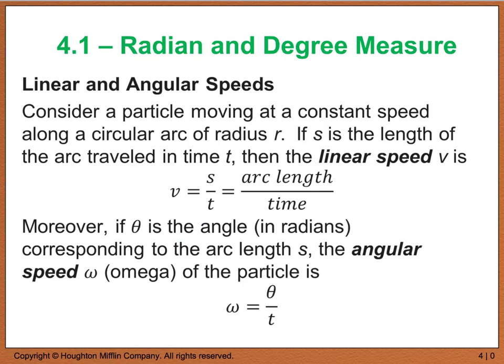Another application of radian and degree measure deals with linear and angular speeds. Now, if we have a particle that's moving at a constant speed along a circular arc of radius r, and if s is the length of radius r traveled in time t, then we have linear speed, which is denoted with a lowercase v, is s divided by t, and s is our arc length divided by our time.